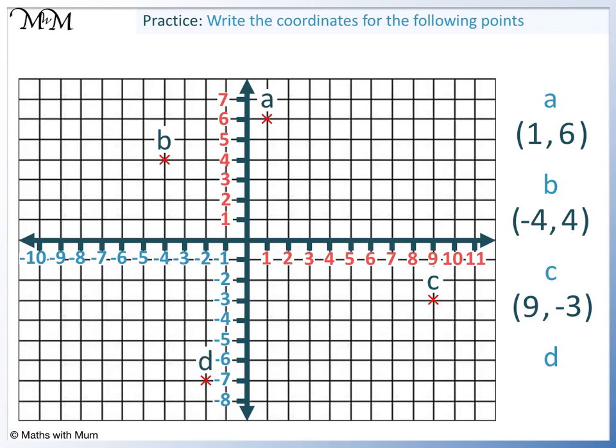Question d. Reading across we have -2. Reading down we have -7. The coordinates are (-2, -7).